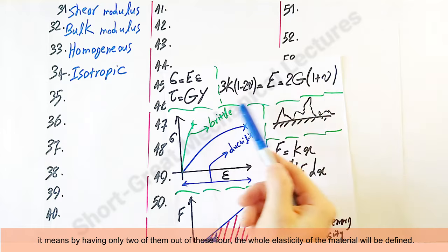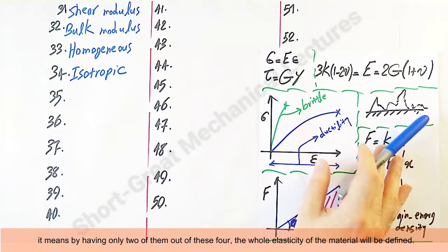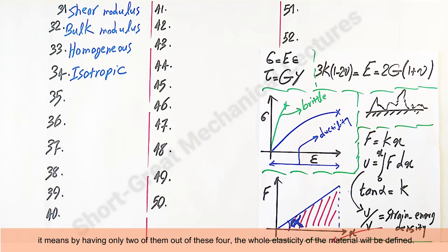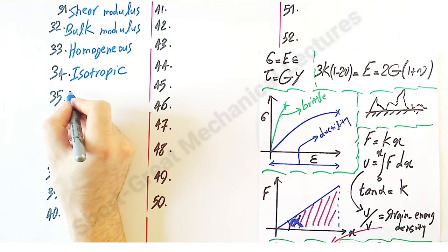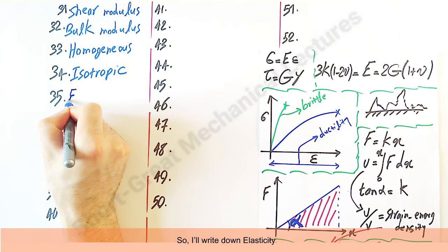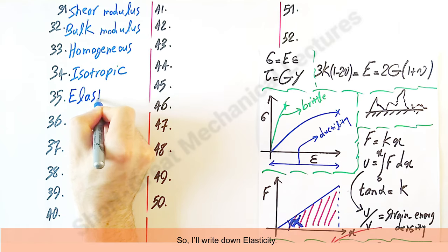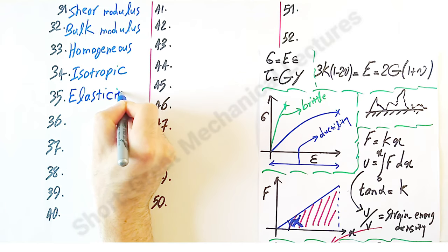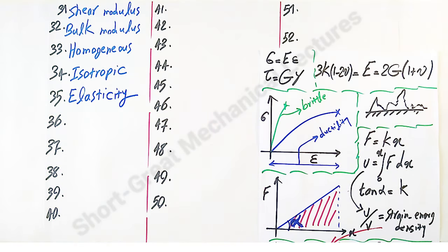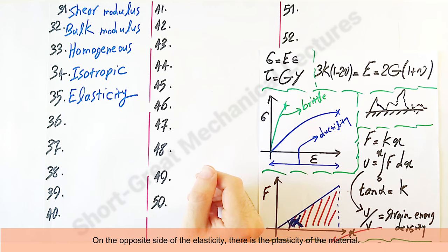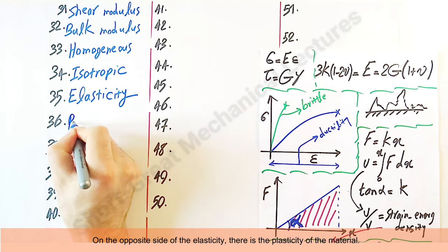So now, as I told, if the material is homogeneous and isotropic, then this relationship governs among Young's modulus, shear modulus, bulk modulus, and Poisson's ratio. It means by having only two of them out of these four, the whole elasticity of the material will be defined. So I'll write down elasticity. On the opposite side of the elasticity, there is the plasticity of the material.